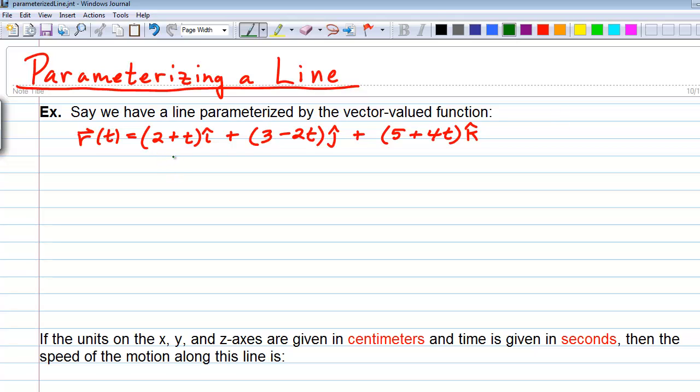So let's say we have a line parameterized by the vector valued function given here. R of t is 2 plus t i plus 3 minus 2t j plus 5 plus 4t k. As you may remember, the first component, the i component, is your x, so this would be equivalent to x equals 2 plus t. The second component, the j component, is your y, so here we have y equals 3 minus 2t, and the k component is your z coordinate, so we have z equals 5 plus 4t. So these would be the parametric equations of the line given or traced out by this vector valued function.